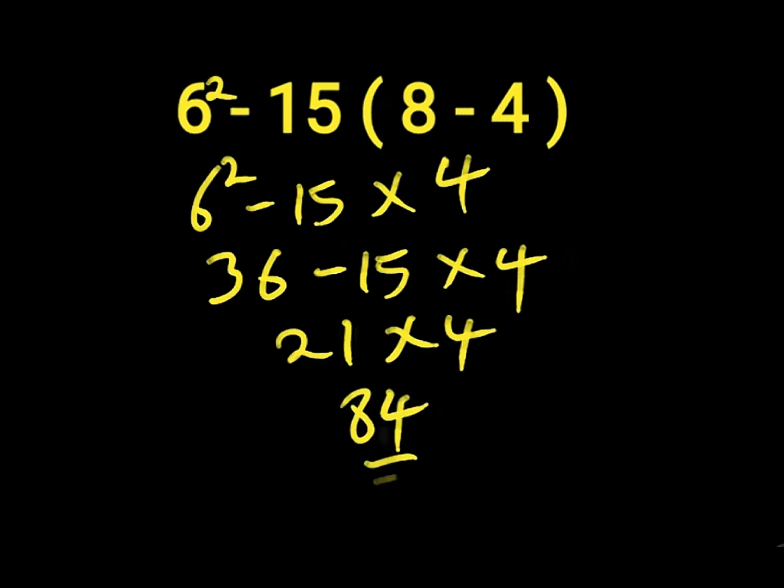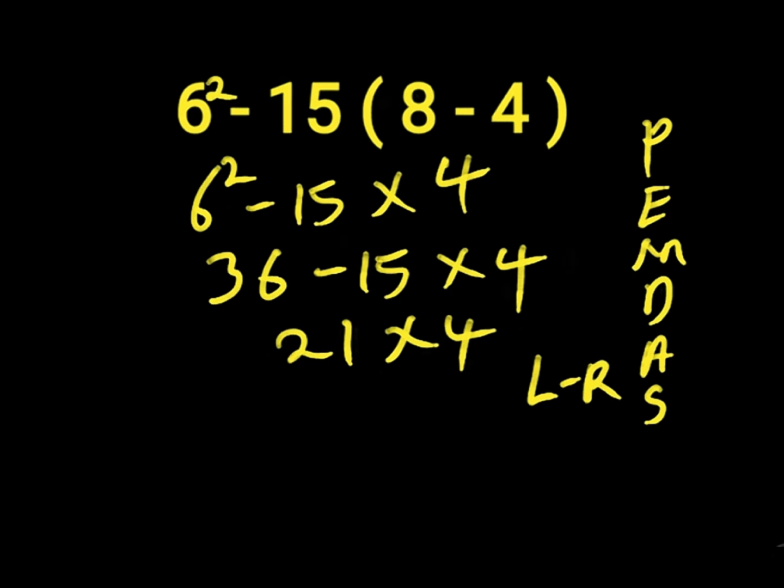So this answer is incorrect because we did not work according to the order of operation, which is PEMDAS. In PEMDAS we have parentheses, exponents, multiplication, division, addition, and subtraction. Remember, multiplication and division have equal priorities, such as addition and subtraction, working from left to right. Let's dive into the right answer to this question.